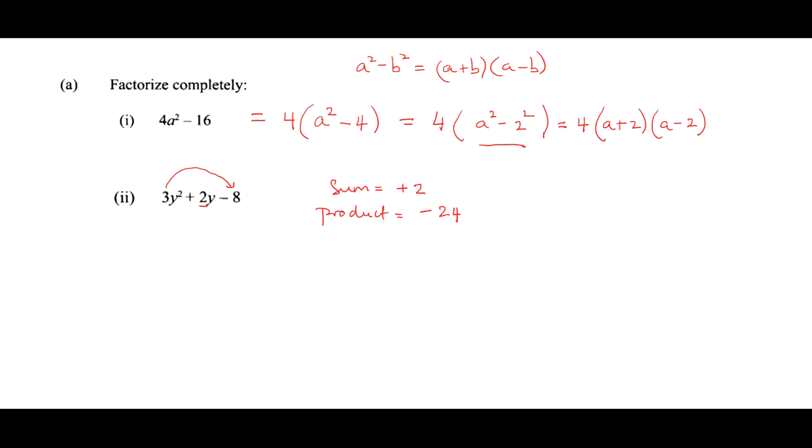So the two numbers that we are looking for here will be 6 and minus 4. Let's do a quick check: 6 plus minus 4 will give me plus 2, and 6 multiplied by minus 4 will give me minus 24. So your next step is to replace the middle term. You are going to put 3y squared plus 6y minus 4y minus 8. I got the 6y and the minus 4y by using these two numbers here.